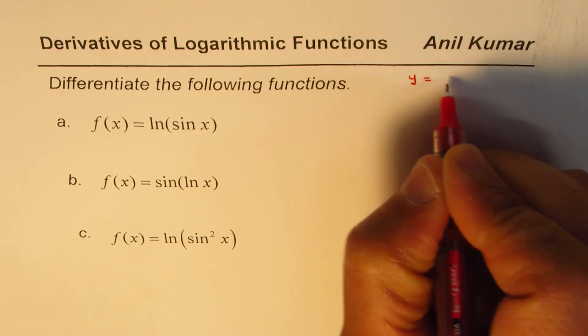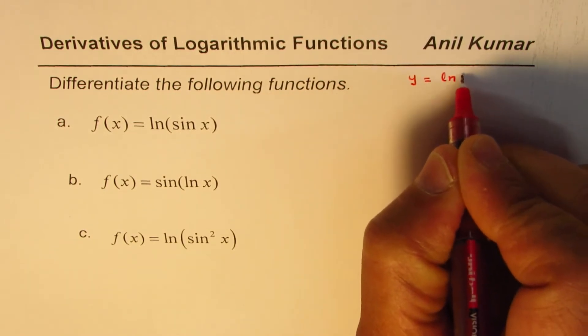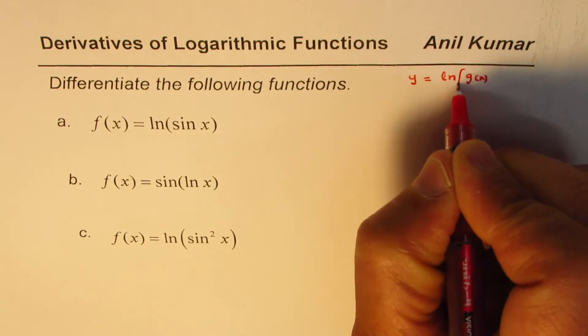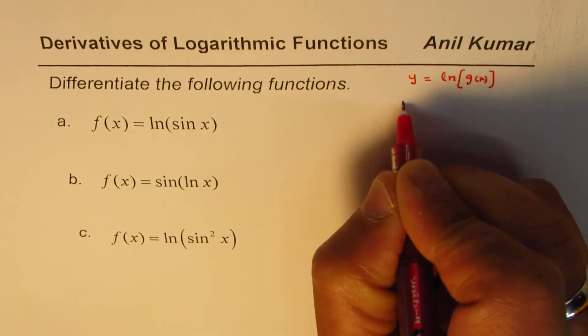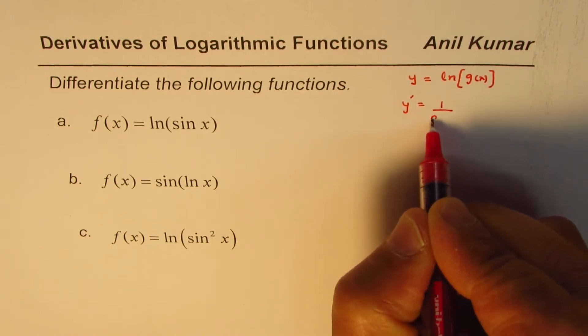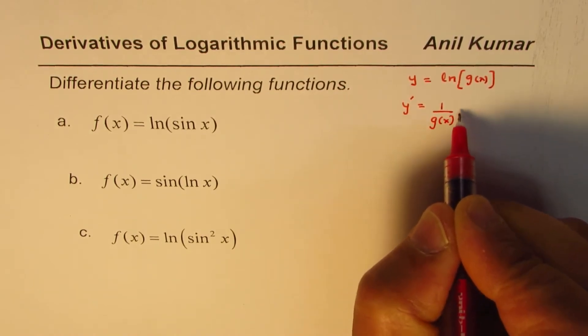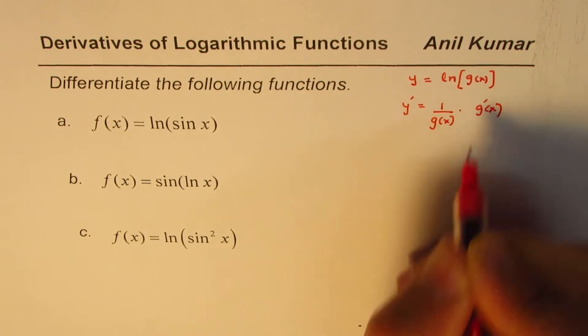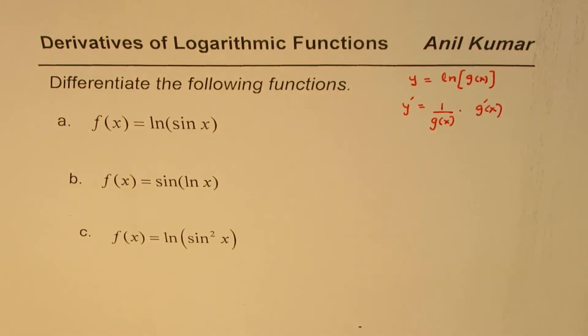If y equals ln of g of x, then the derivative y dash will be 1 over g of x times derivative of g of x. That's the formula which you can apply to find the derivative of these functions.